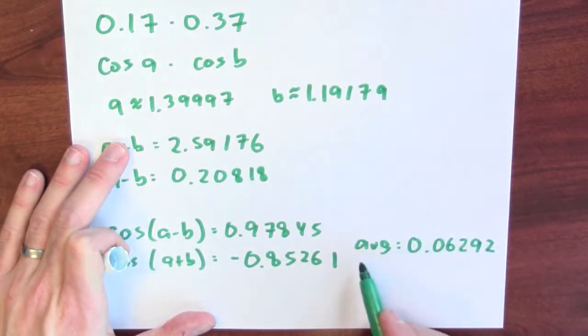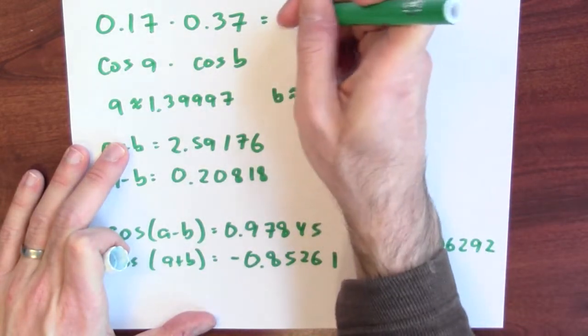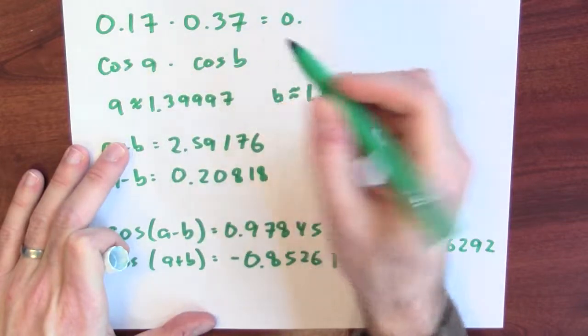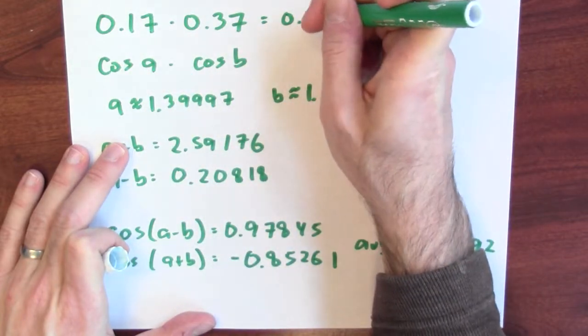Wow. I mean, look, this average is really close to the actual product of 0.17 and 0.37, which is 0.0629.